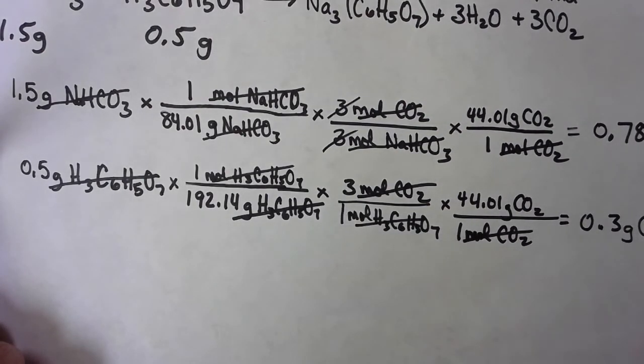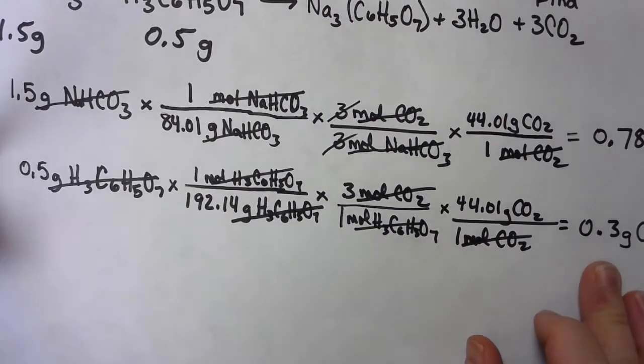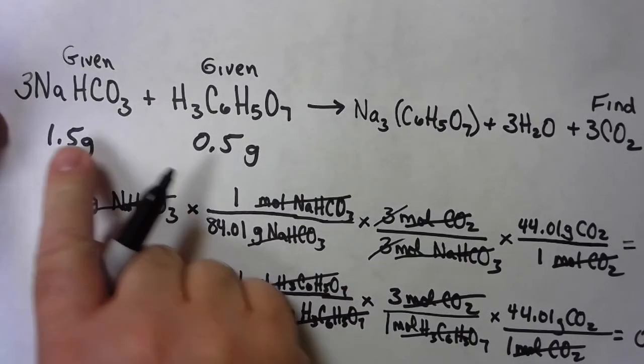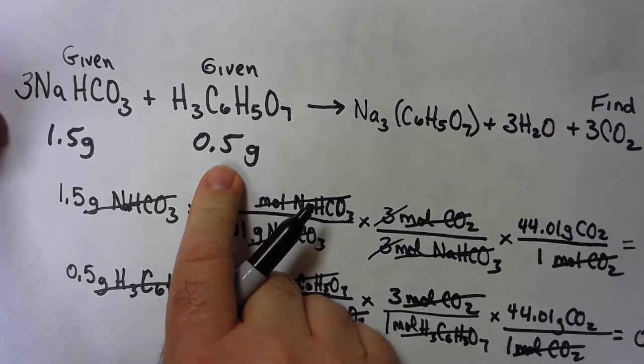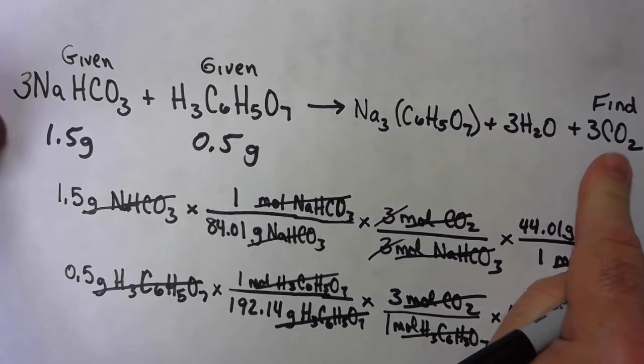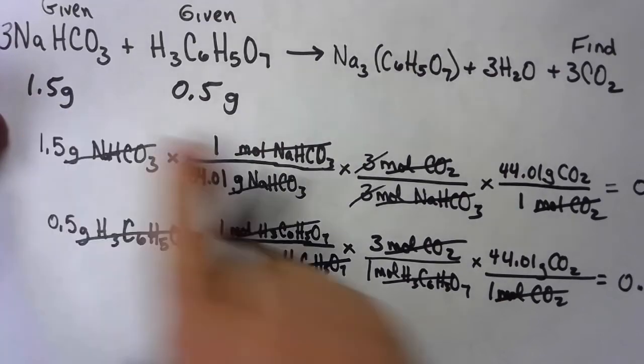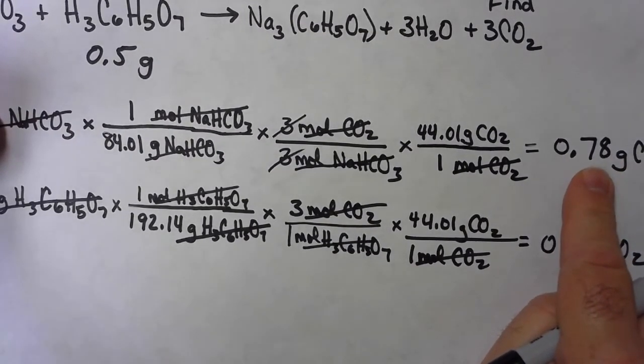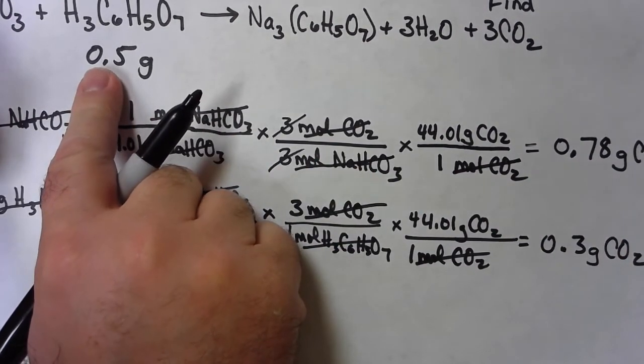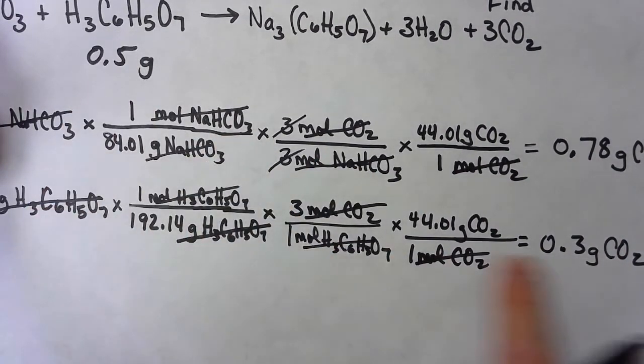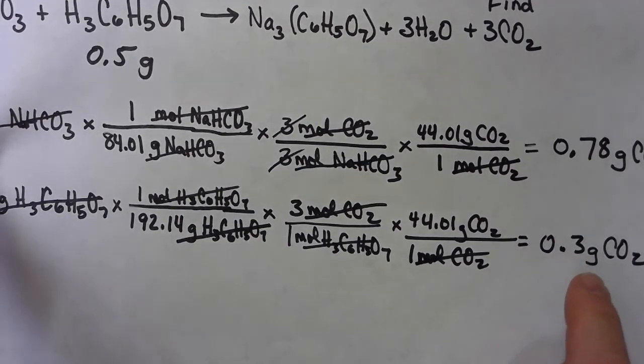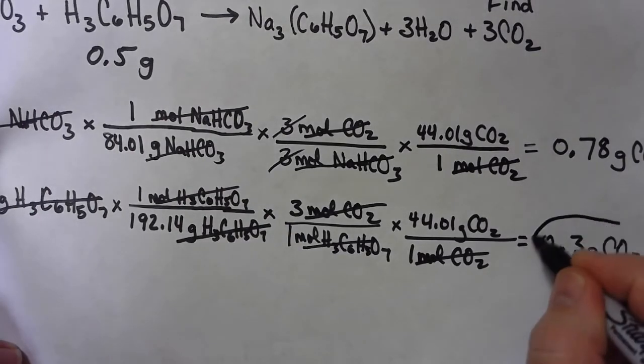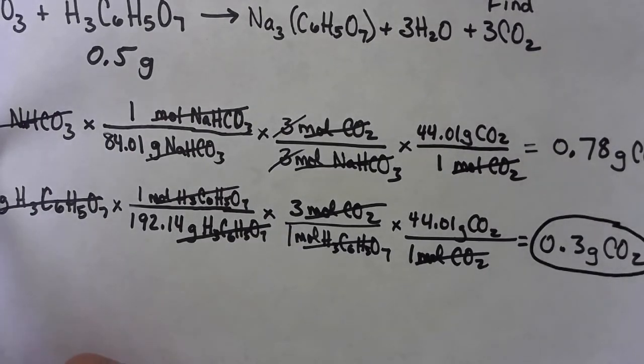So at that point, I predicted 0.3. That was a pretty good predictor. So if we started with 1.5 grams of the sodium bicarbonate and 0.5 grams of the citric acid, how many grams of carbon dioxide can I make? Well, if all the 1.5 grams gets used up, I make 0.78 grams of carbon dioxide. If all 0.5 grams of the citric acid get used up, I can only make 0.3 grams. So the right answer is if I'm mixing those two chemicals in that proportion together, the best I can do is 0.3 grams of carbon dioxide.